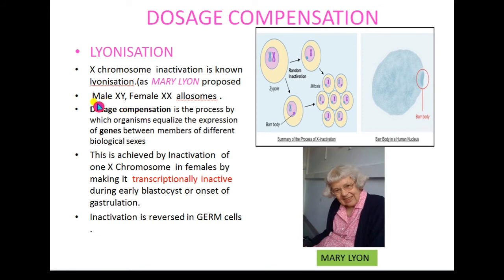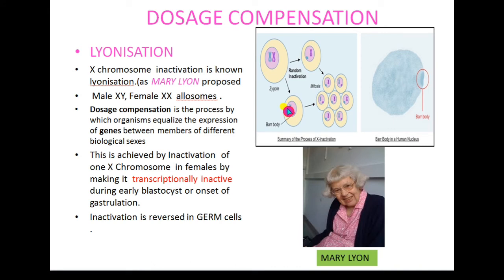Both male and female contain only one functional copy of genes on the X chromosome. The inactivation of the other X chromosome in females is done by lyonization. Lyonization makes the X chromosome transcriptionally inactive during early embryonic development. A long RNA winds around one of the X chromosomes and tightly coils around it, preventing it from being transcribed. This inactivation occurs during the blastocyst stage or at the onset of the gastrulation stage.